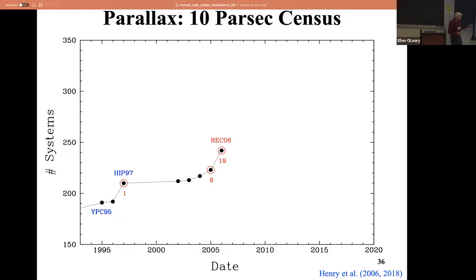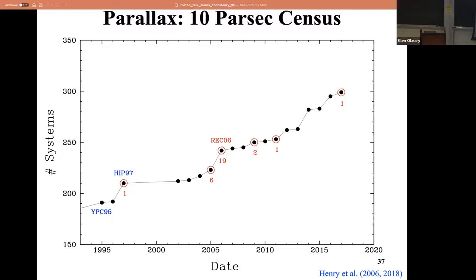We started our program on that little 0.9 meter telescope in Chile right here and started publishing things. Every time you see a red number, that was a system we added. Most of these were brown dwarf additions because we'd collected most of the red dwarfs that had been missed. The southern sky was really good to do that because most of the observations and telescopes were in the north.